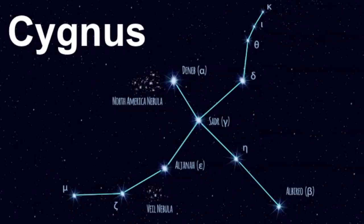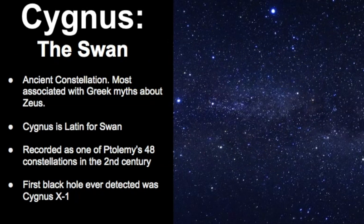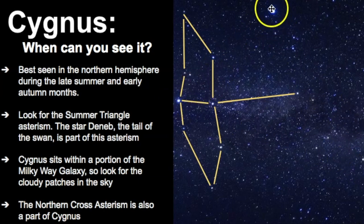My name is Janine and in this video we're going to focus on the different types of celestial objects that can be found within the boundaries of Cygnus. Cygnus is an ancient constellation and its name is Latin for swan. There are lots of celestial objects in this particular constellation to view because it sits within the Milky Way galaxy. In fact, the first black hole ever detected was labeled Cygnus X1 and found within this region of the sky. It's best seen in the northern hemisphere during the late summer months and into the early autumn months. The best way to find it is to look for the summer triangle asterism, and the star known as Deneb is part of this asterism.